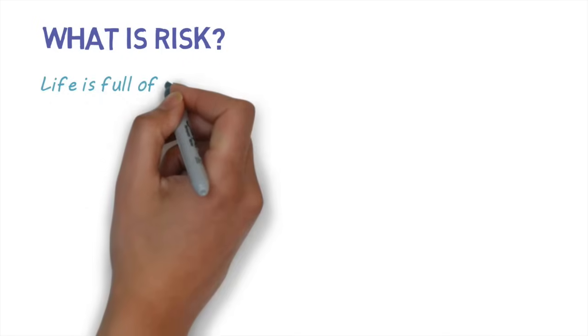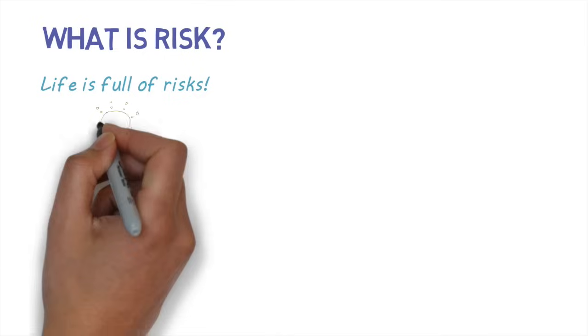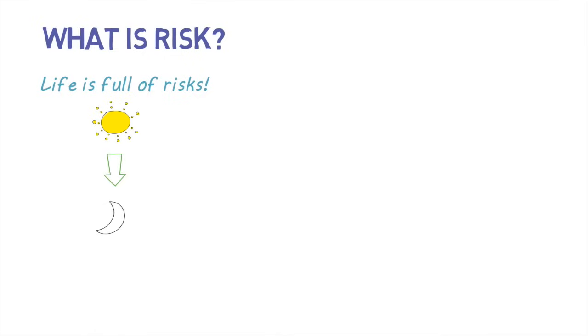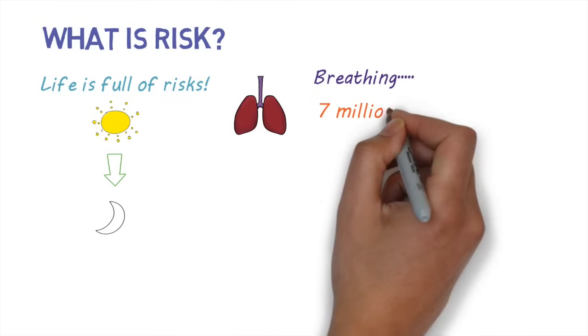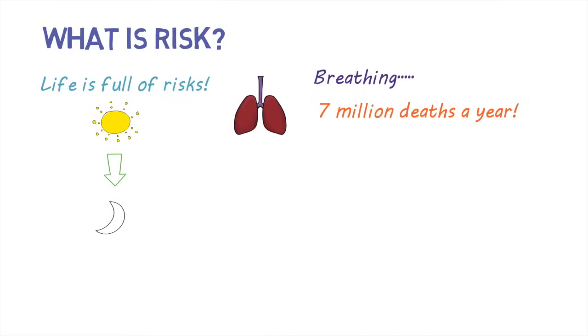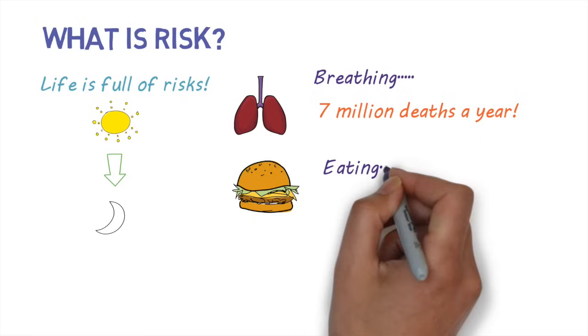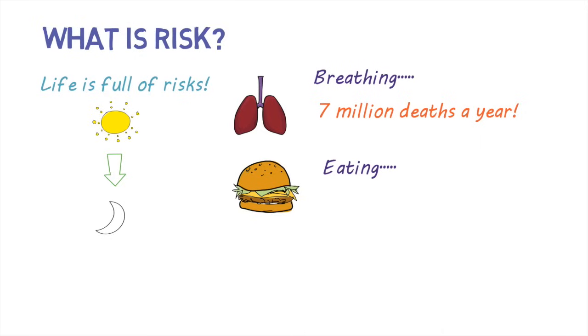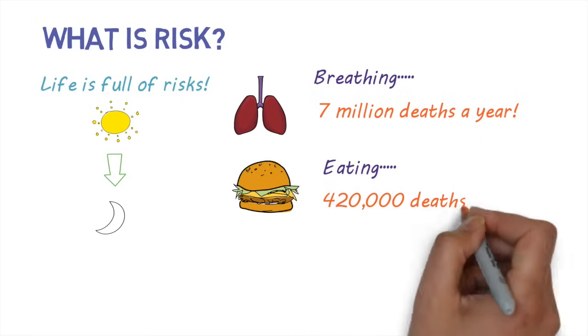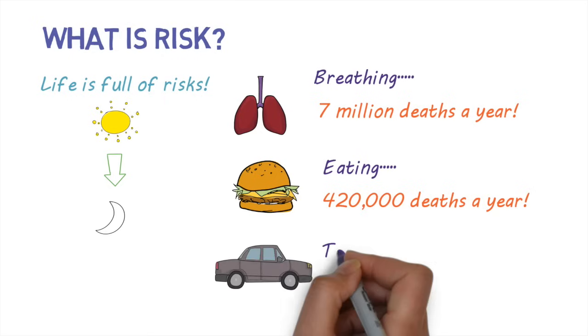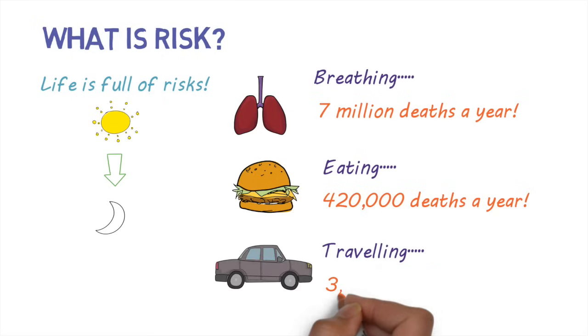First of all, what is risk? Life is full of risks from the time we wake up to the time we go to sleep and even in between. For example, there are risks associated with breathing—air pollution causes about seven million deaths each year. There are risks associated with eating—foodborne illness causes about 420,000 deaths each year. And then there's traveling—road accidents cause over 3,000 deaths each day.